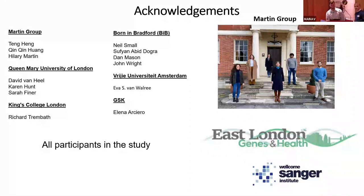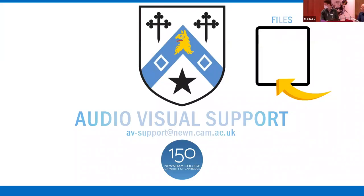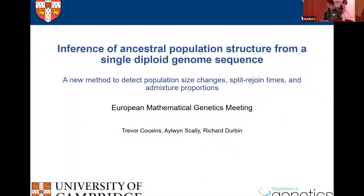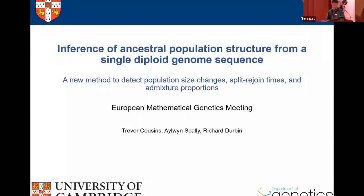Thank you very much, Daniel. The next speaker is Trevor Cousins, a PhD student with Richard Durbin and Aildan Scully in the Department of Genetics in Cambridge. Today his talk is about inference of ancestral population structure from a single diploid genome sequence.